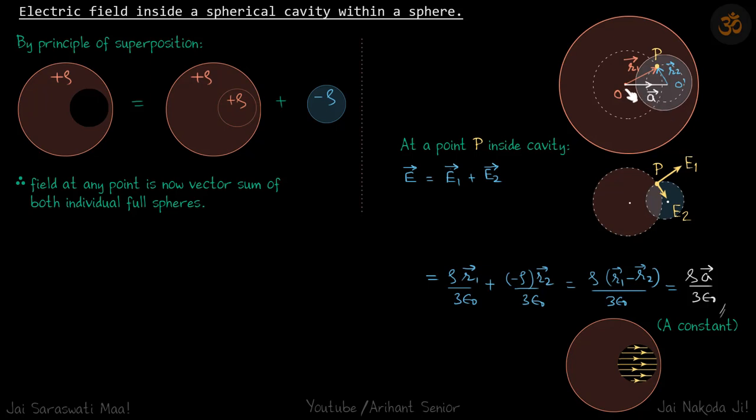And you can see from diagram, r₁ vector minus r₂ vector is a vector. So this simplifies and becomes ρa vector/3ε₀, which is a constant. So it's independent of position of P inside the cavity.